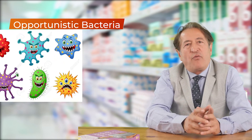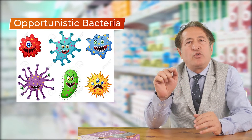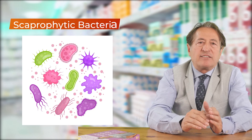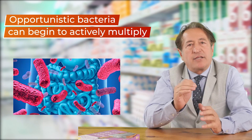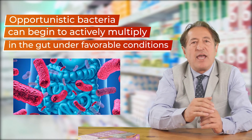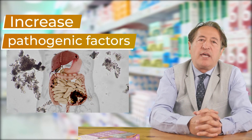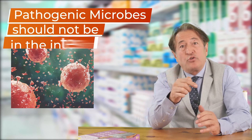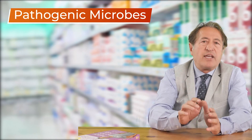Opportunistic bacteria are found in healthy people but in small quantities and therefore do not lead to the development of disease. Saprophytic bacteria in the intestines of a healthy person prevent their proliferation. These opportunistic bacteria can begin to actively multiply in the gut under favorable conditions and increase their pathogenic factors, which may eventually become the cause of disease. Pathogenic microbes are the microbes that shouldn't be in the intestines of a healthy person. We are not going to address that in this video.